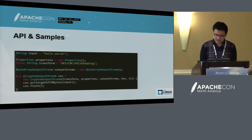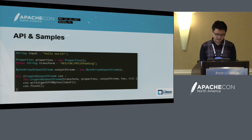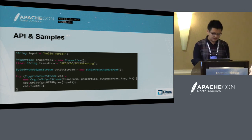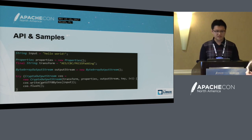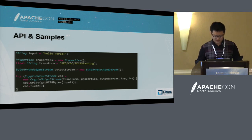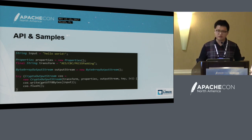Here is the stream API sample. We can see the stream API can secure stream and channel data. The stream is based on the cipher, and the cipher is based on the mode. Currently Spark is using this stream API.